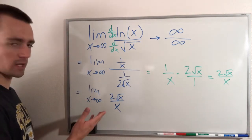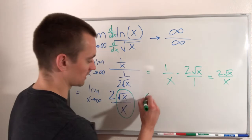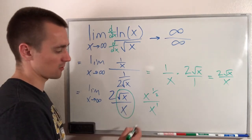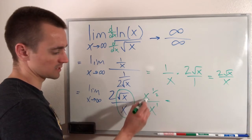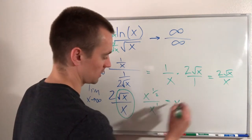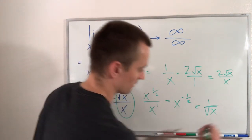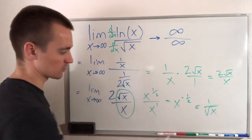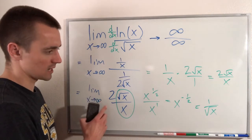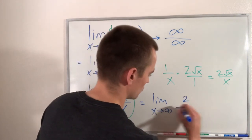So now with this limit, we can think about how to simplify 2 root x over x. Square root of x over x — thinking of square root of x as x to the 1/2 over x — since these have the same base, we subtract the exponents: 1/2 minus 1 gives x to the negative 1/2, which is the same as 1 over square root of x. So square root of x over x equals 1 over square root of x. Therefore this limit is the same as the limit as x goes to infinity of 2 over the square root of x.